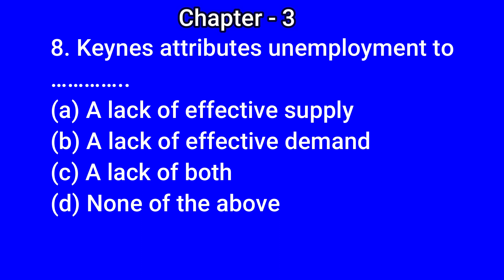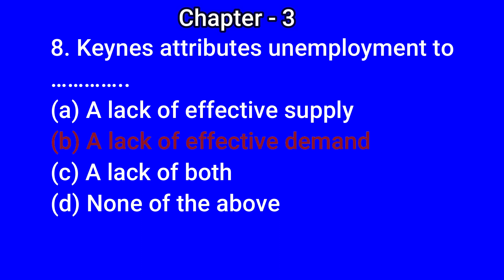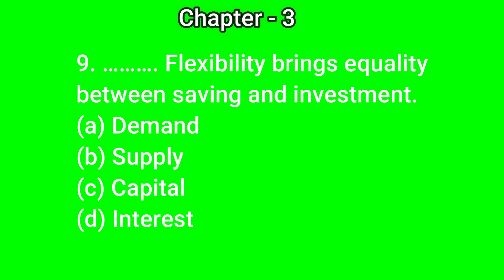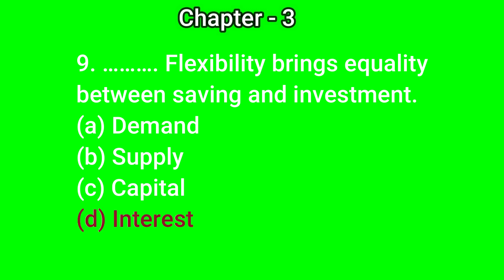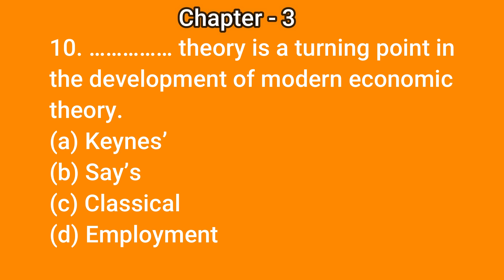...answer is (b) lack of effective demand. Question number 9: dash flexibility brings equality between saving and investment — (a) demand, (b) supply, (c) capital, (d) interest. The correct answer is (d) interest. Question number 10: dash theory is a turning point in the development of modern economic theory — (a) Keynes's, (b) Say's, (c) classical, (d) employment. The correct...